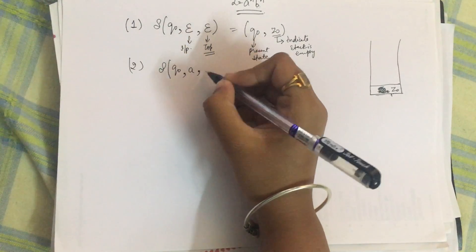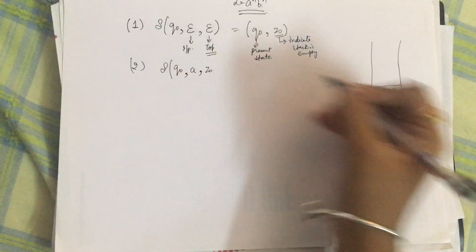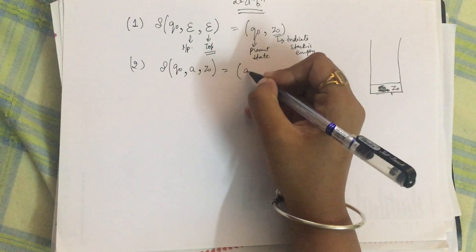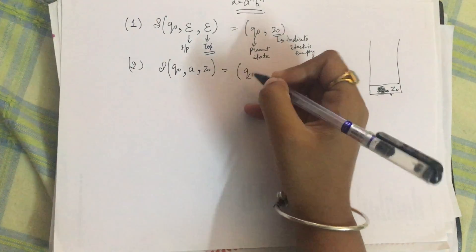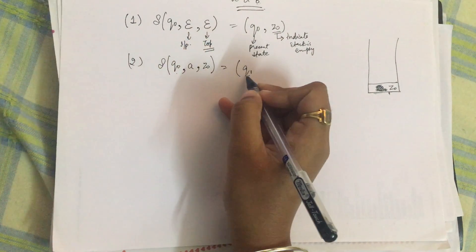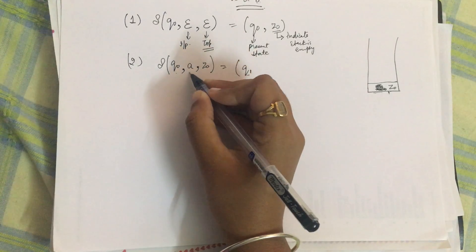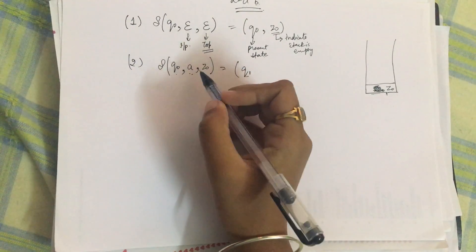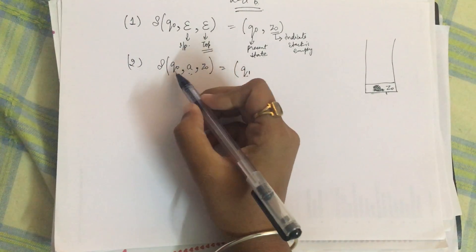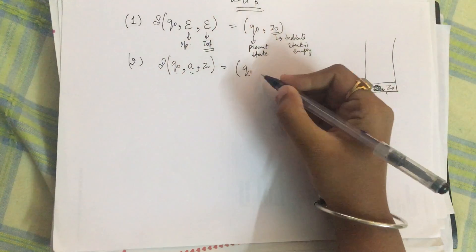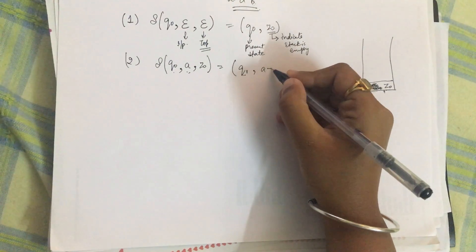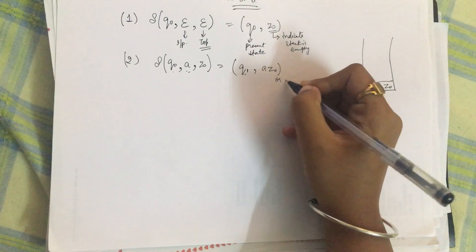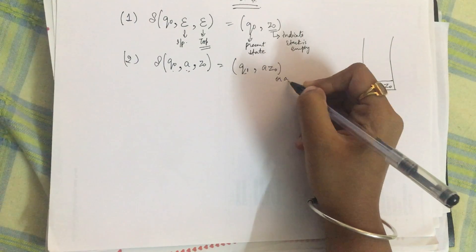The input symbol is now 'a', the top of the stack contains z naught, and this leads to state q1. A state change takes place whenever the input symbol changes — it has changed from null to 'a' — so the state changes to q1, and the stack will now have 'a z naught'.